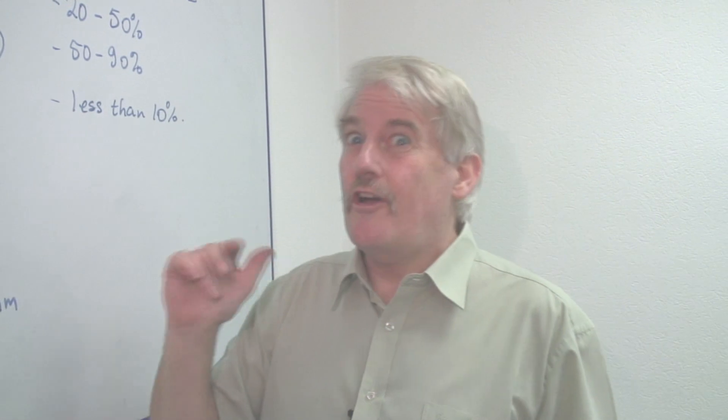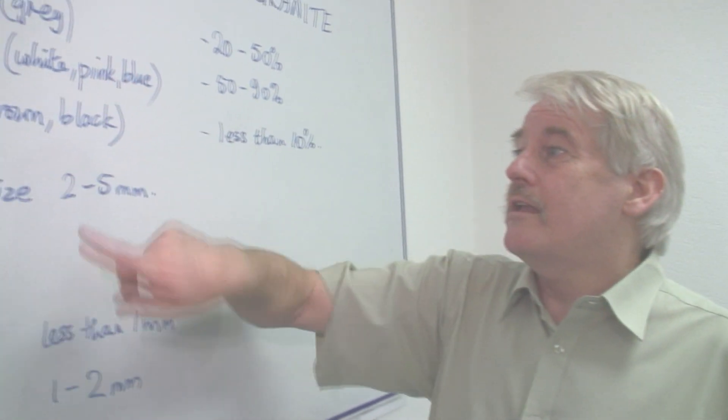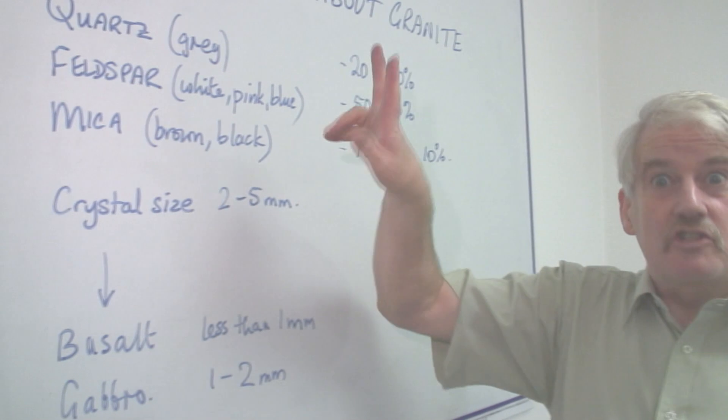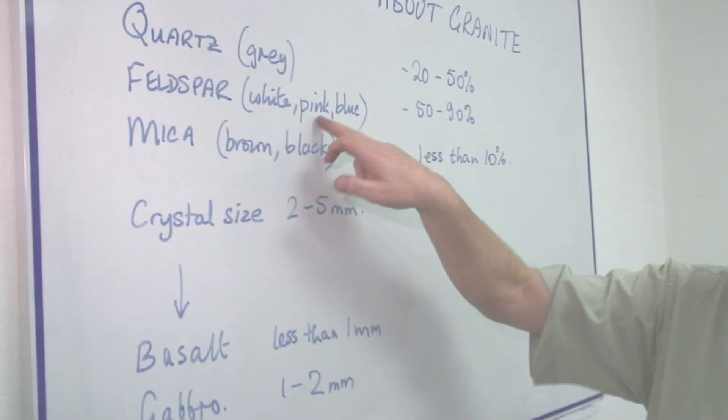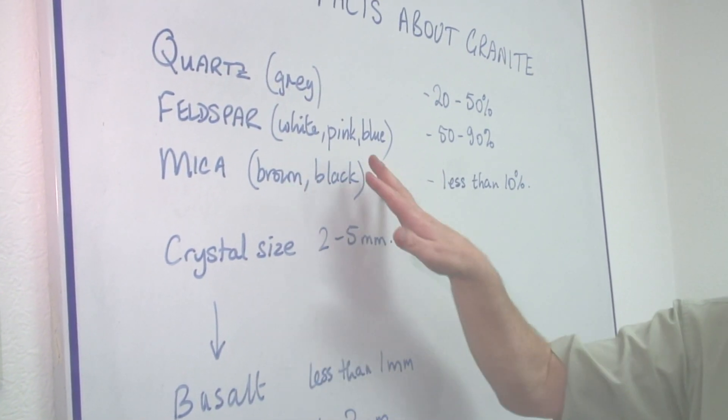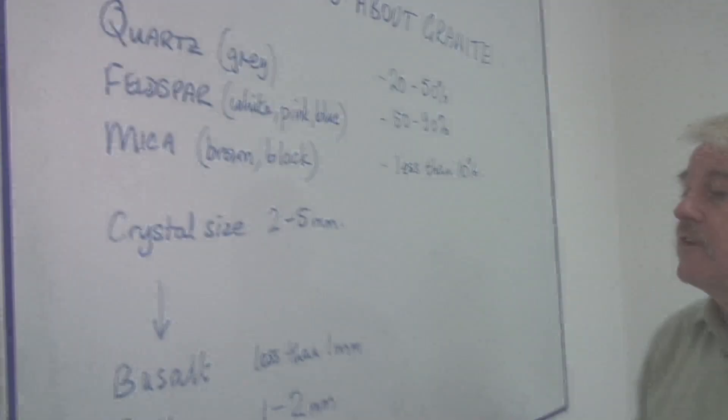You'll see very often they're pink actually, pink, grey and brown or black. Sometimes there's pink and white, two types of feldspar in the granite as well.